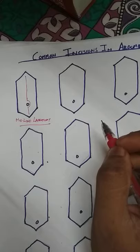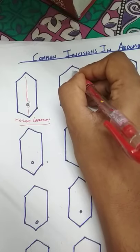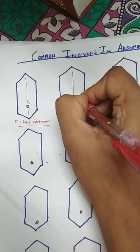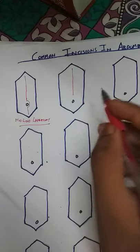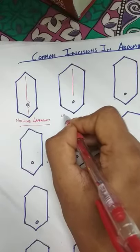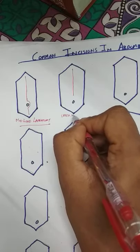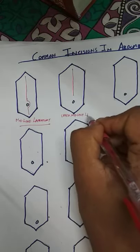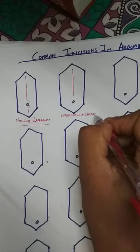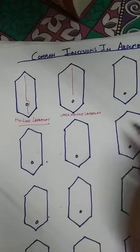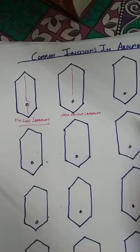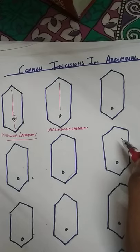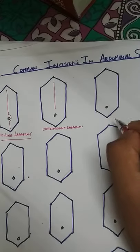The second important surgical incision is called the upper midline laparotomy. This incision is basically preferred in cases of perforated duodenal ulcers.